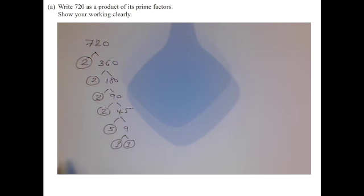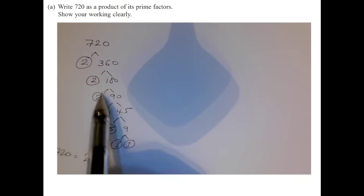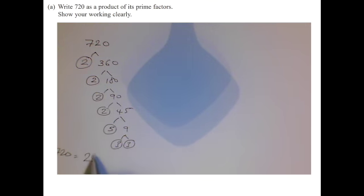So we can say that 720 is exactly the same number as 2 to the power of 4 times by 3 squared times by 5. Now, I would show that in an exam, but there is a button for that on your calculator.